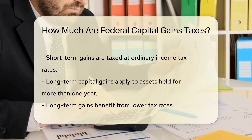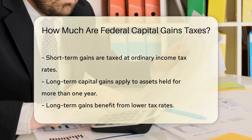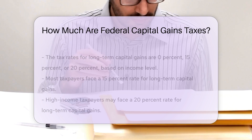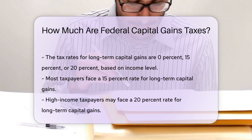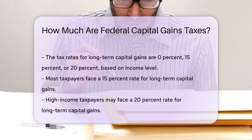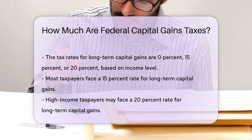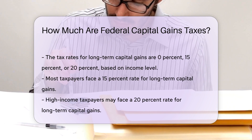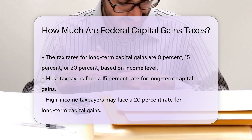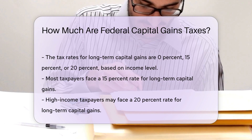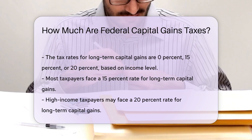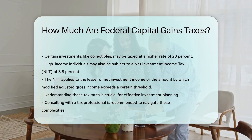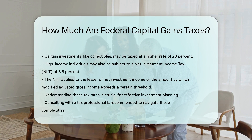The tax rates for long-term capital gains are 0%, 15%, or 20%, depending on the taxpayer's income level. For most taxpayers, the rate is 15%. High-income taxpayers may face a rate of 20%. Certain types of investments, such as collectibles, may be taxed at a higher rate of 28%. Additionally, there is a net investment income tax (NIIT) of 3.8% for high-income individuals. This tax applies to the lesser of your net investment income or the amount by which your modified adjusted gross income exceeds the threshold.